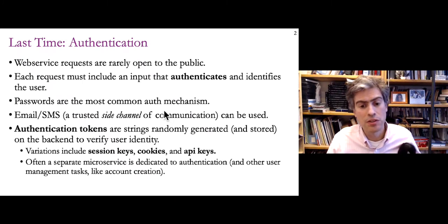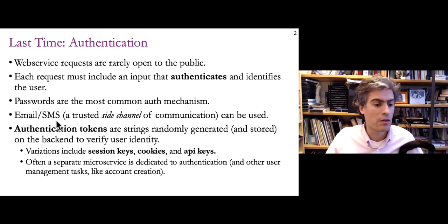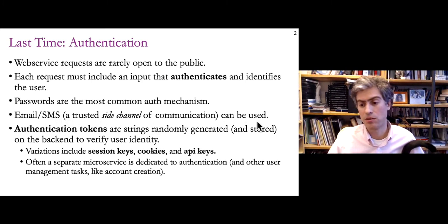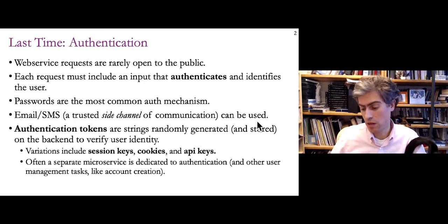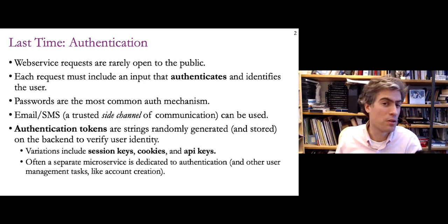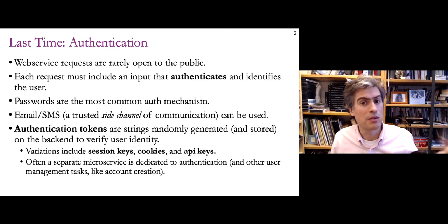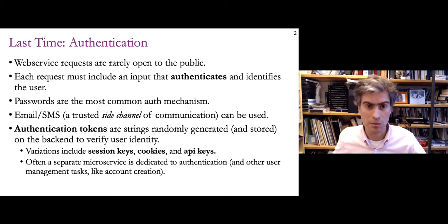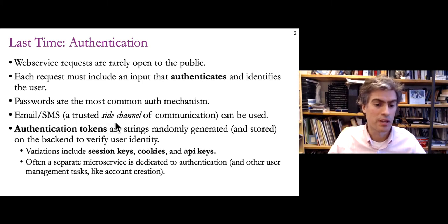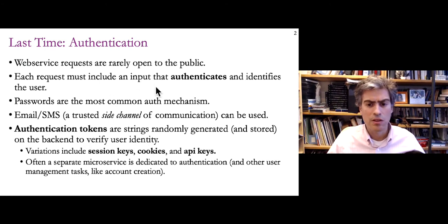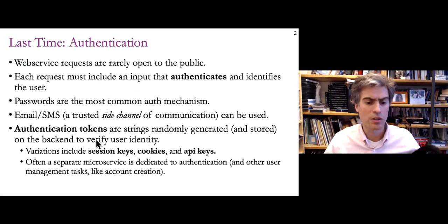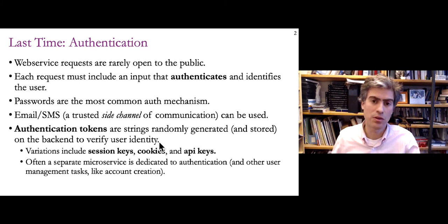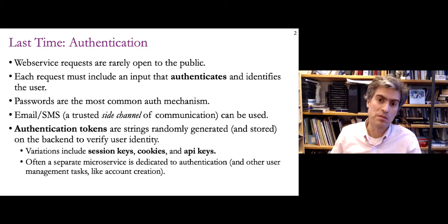Passwords are the most common way to do authentication. We can also use email or SMS as a side channel. If you know the person's phone number, you can send a random number back to them over SMS and ask them to return it — proving they have access to that phone. That's a form of authentication, similar to a password. In many of these schemes, we use authentication tokens: randomly generated strings stored on the back end for verifying identity.